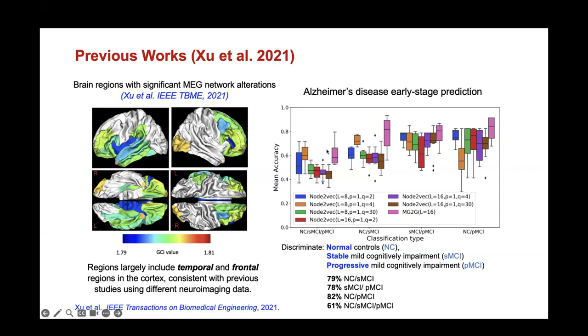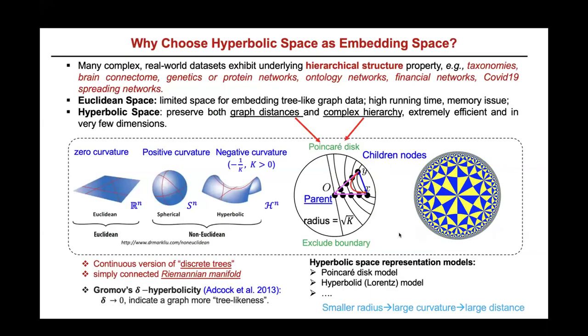On the right side, the classification results are shown based on different groups — normal controls, stable MCI, and progressive MCI. In the following slides, I will start to talk about why we want to choose hyperbolic space as an embedding space.